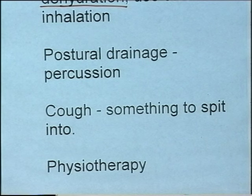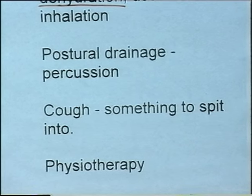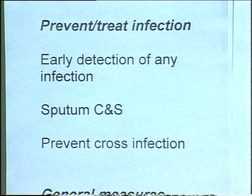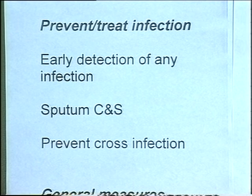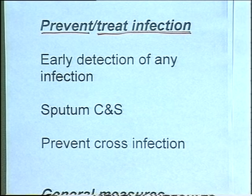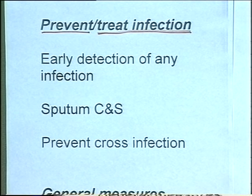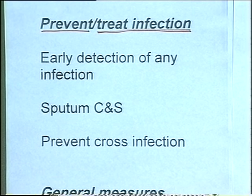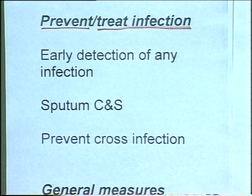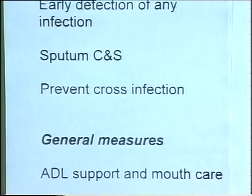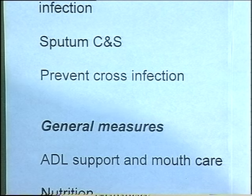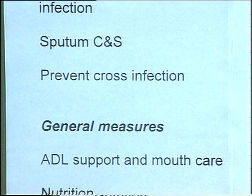We need to identify, prevent, and treat infections. Early identification makes treatment easier and prevents damage from that infection. Remember, we may immunize patients against viruses to make subsequent secondary bacterial infection less likely. Early recognition and treatment of infection, with culture and sensitivity-guided antibiotic therapy to target the specific organism. Also prevent cross-infection from other potentially infected people.